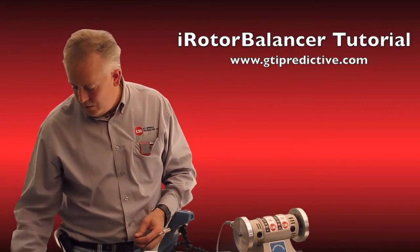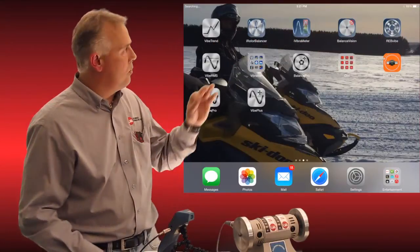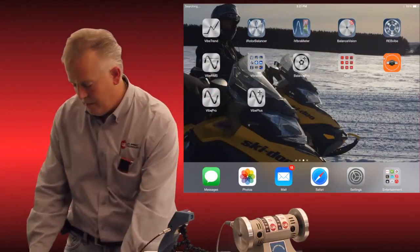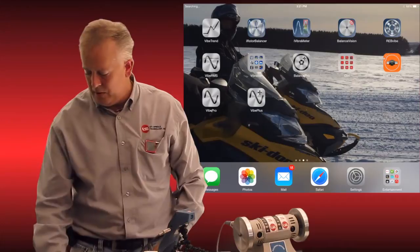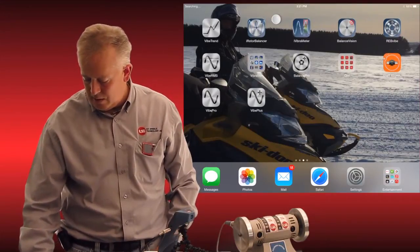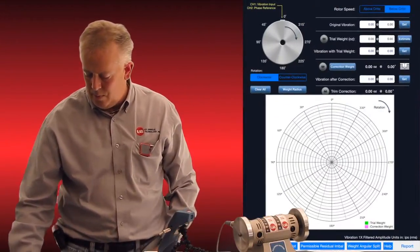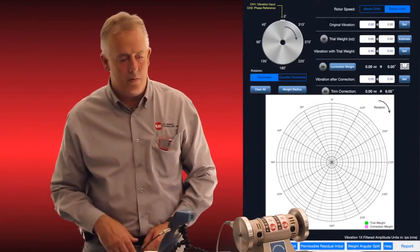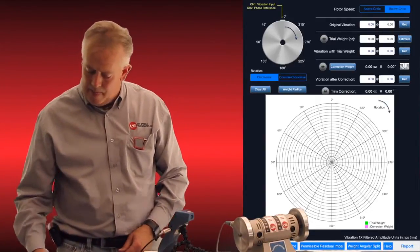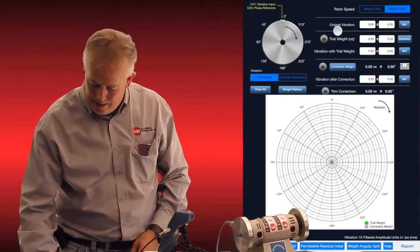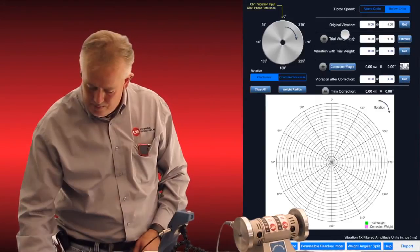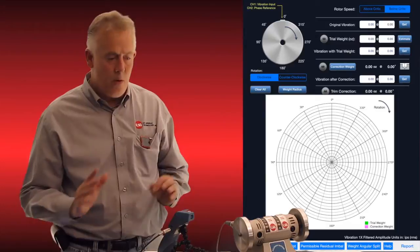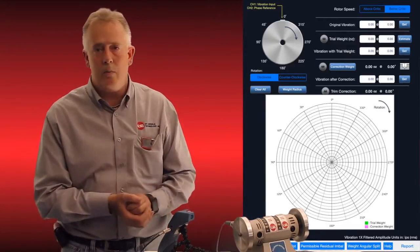So first thing I need to do is start my display recorder. You'll see my screen is up here and I've got a bunch of icons and I'm going to select iRotor Balancer, which is in the portrait mode. As you can see, we get a polar plot and a nice list of prompts up here of exactly what to do. Before we get to that, let's get to our hardware setup.